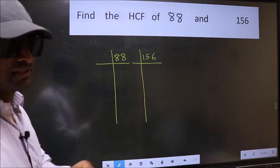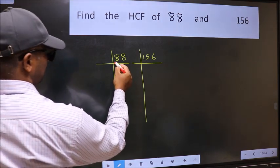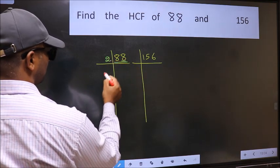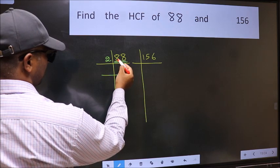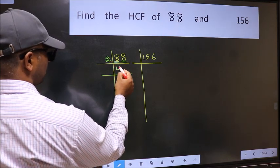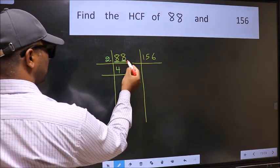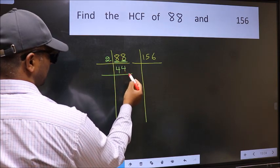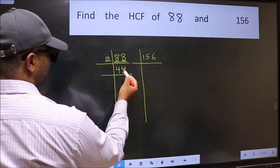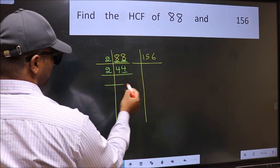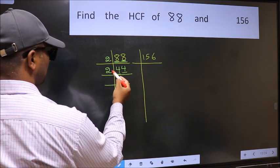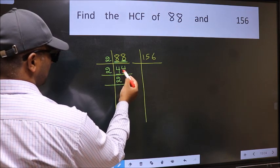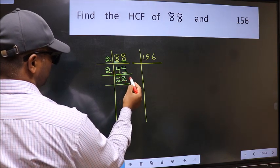In this number, last digit is 8 — even — so take 2. First number 8: when do we get 8 in the 2 table? 2 fours are 8. The other number 8: 2 fours are 8. Now last digit 4 — even — so take 2. First number 4: 2 twos are 4. The other number 4: 2 twos are 4.